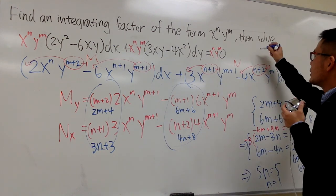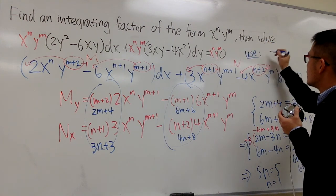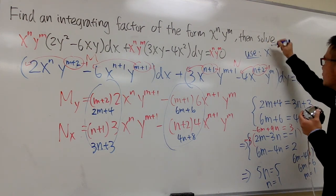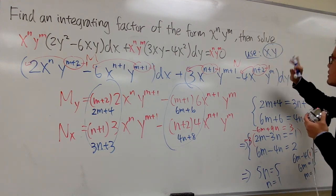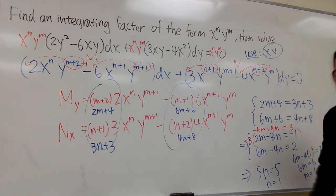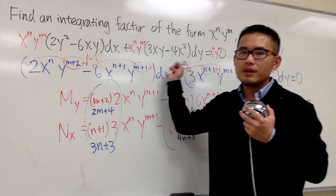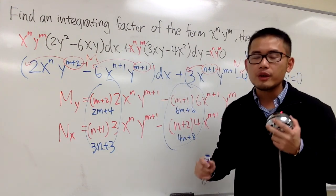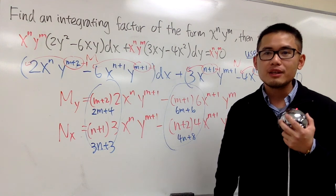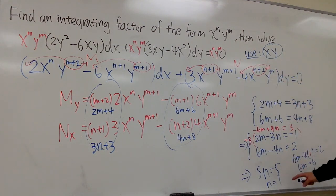So the special integrating factor in this case is x^1 * y^1, which is just xy. You take this, multiply throughout the original equation, and the resulting equation will be exact. You should know how to solve it from there — that's how you find the m and n values.